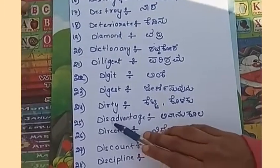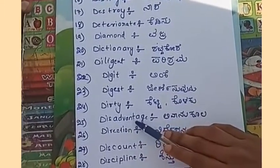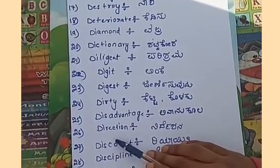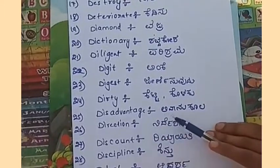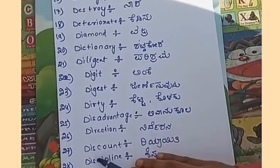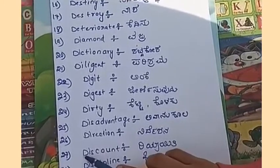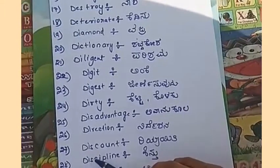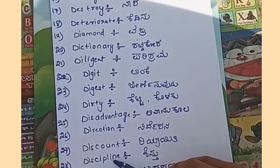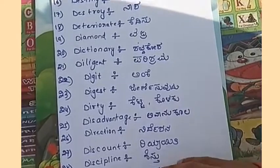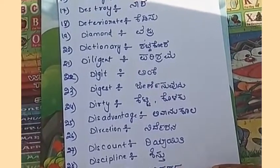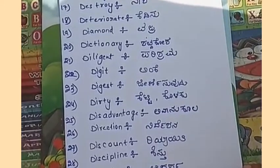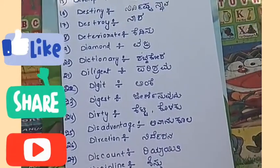Disadvantage, D-I-S-A-D-V-A-N-T-A-G-E, disadvantage — ananukula. Direction, D-I-R-E-C-T-I-O-N, direction — nideshana. Discount, D-I-S-C-O-U-N-T, discount — riyayiti. Discipline, D-I-S-C-I-P-L-I-N-E, discipline — shistu. Ideal, I-D-E-A-L, ideal — adarsha. Thank you for watching our video.